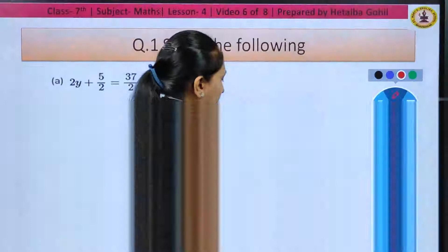Question number 3: solve the following. Same way children here also you have to just transpose the number. So 4 = 5 × (p - 2). Here first let us multiply the bracket: 5 into p gives us 5p, 5 into minus 2 gives us minus 10. Finally the equation we will get is 4 = 5p - 10. Therefore 5p = 4 + 10. Moving further, 5p = 14. Therefore p = 14/5. This is our answer.